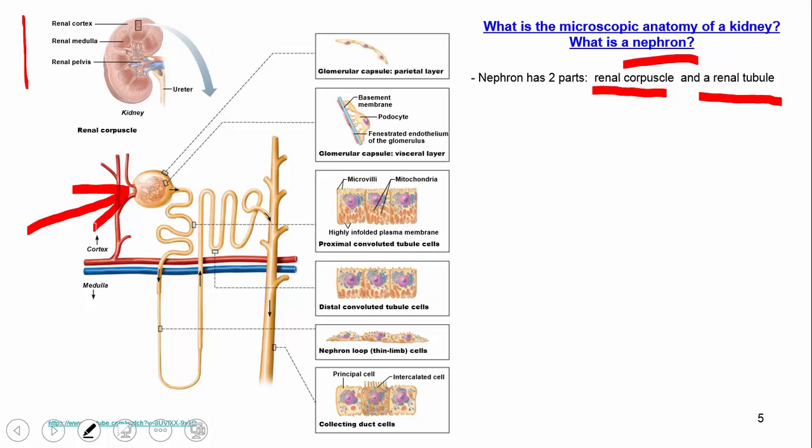Whenever we talk about the renal corpuscle, there are two main parts: the glomerular capsule or Bowman's capsule, and the glomerulus. The glomerulus is this ball-of-yarn-looking thing — a bunch of capillaries bringing blood into the Bowman's capsule to be filtered. Stuff is going to be removed from the blood inside the glomerulus and put into Bowman's capsule. That stuff that is removed is what we call the filtrate.